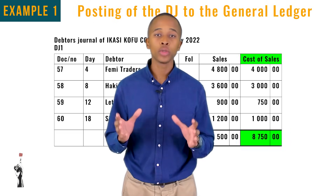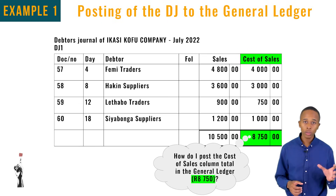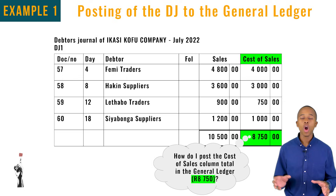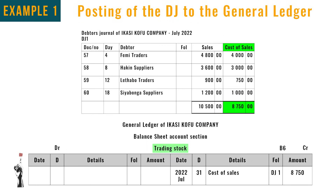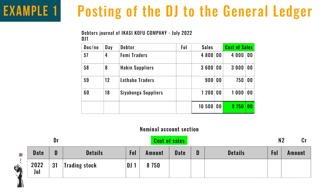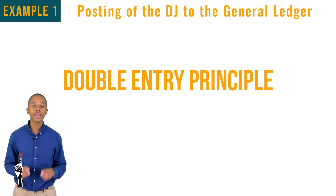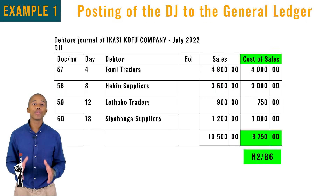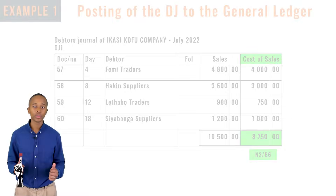Next, looking at the cost of sales column total of R8,750: trading stock is credited because the stock is sold and stock is a current asset which decreases with R8,750. Cost of sales is debited with the amount of the cost price because it is an expense that decreases the owner's equity on the debit side. Apply the double entry principle and put in the folio numbers.